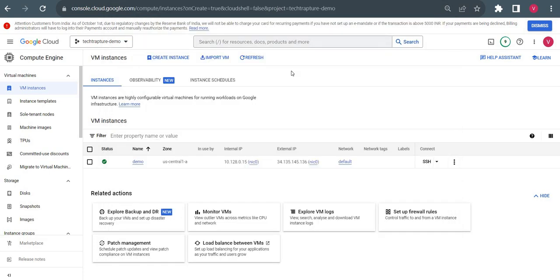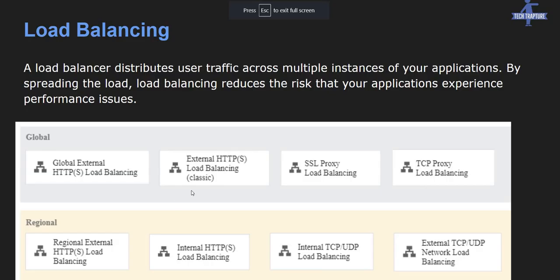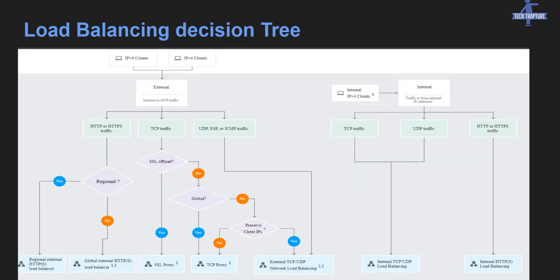There are different types of load balancers in Google Cloud: a global external HTTPS load balancer, an external HTTPS load balancer (classic), SSL proxy, TCP proxy, a regional HTTPS load balancer, an internal HTTPS load balancer, a TCP load balancer, and an external TCP/UDP load balancer. Google has provided very good documentation and a decision tree chart to help decide which load balancer to use.